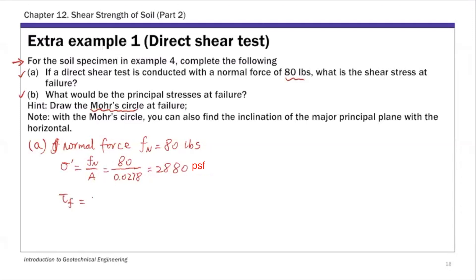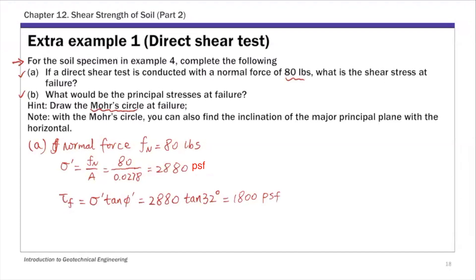The shear stress at failure, tau_F, is found using the Mohr-Coulomb failure criterion. We have sigma prime of 2880 and phi prime from example 4 of 32 degrees, giving a shear stress at failure of 1800. So given this friction angle, we can predict the shear stress at failure for any given normal force or normal stress.